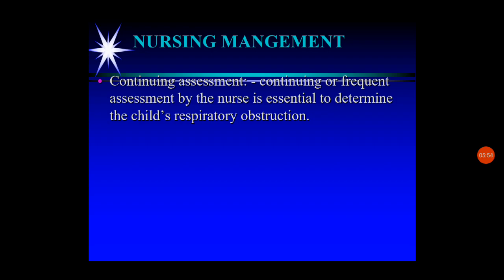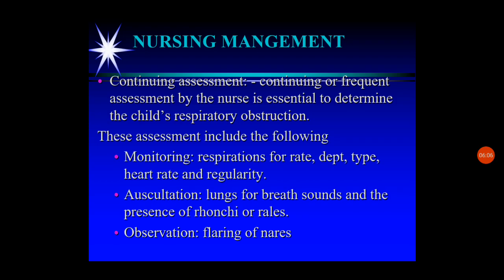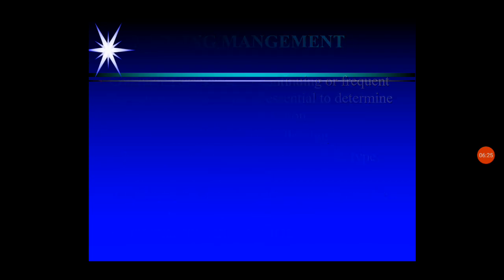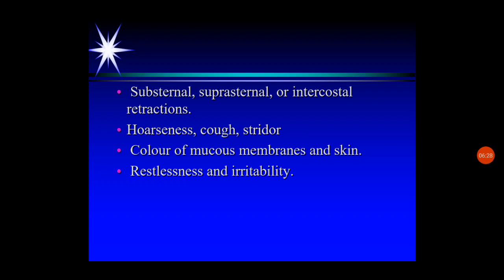Nursing management involves continuing frequent assessment to determine the child's respiratory status, since inflammation can increase progressively. Assessment includes monitoring respiration for rate and depth, heart rate and regularity, auscultation of lungs for breath sounds, presence of rhonchi or rales, flaring of nares, substernal and suprasternal intercostal retractions, hoarseness, cough, stridor, color of mucous membranes and skin, restlessness, and irritability.